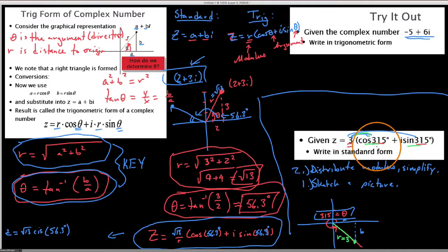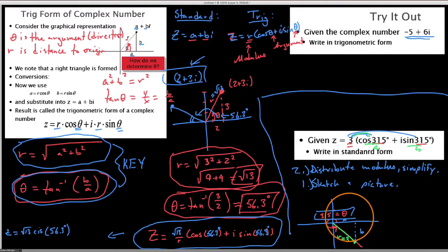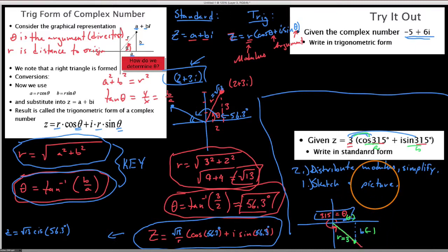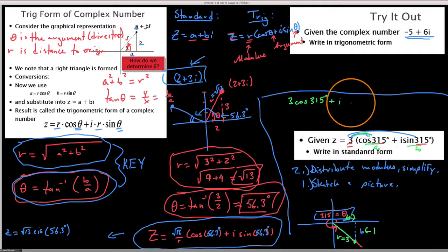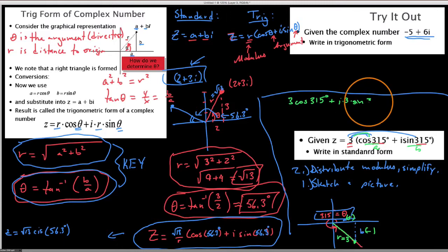Drawing a picture helps tell us whether the components are positive or negative. In this case, the x-component is positive and the y-component is negative since we're in the fourth quadrant. To distribute this, we just grab a calculator and type in 3 cosine 315 and 3 sine 315.